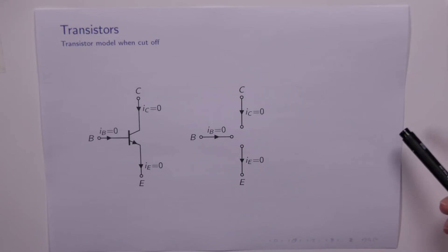We'll now have a look at the models for the transistor in the three different regions of operation. The simplest one is when the transistor is cut off. Now remember the transistor is cut off when VBE, the base emitter voltage, is less than 0.5 of a volt.